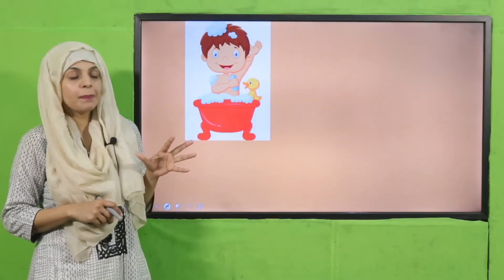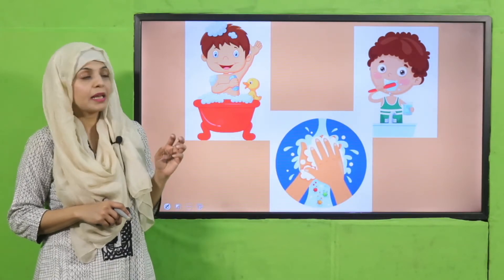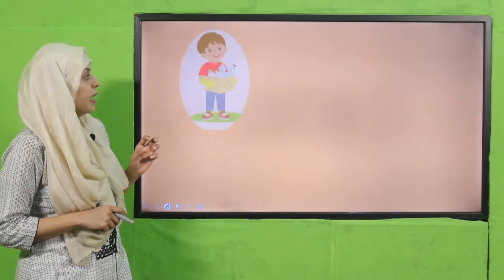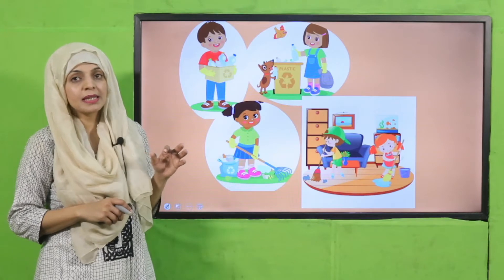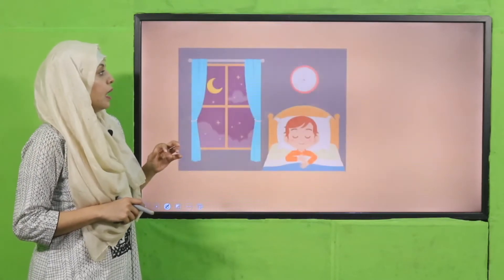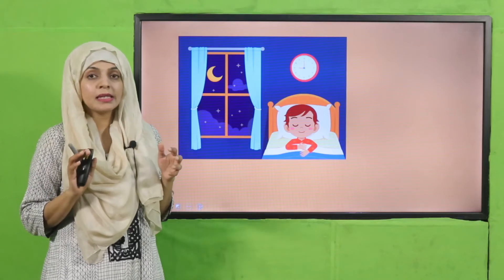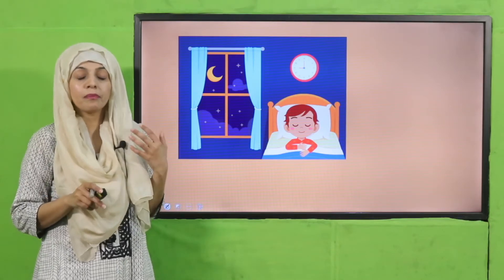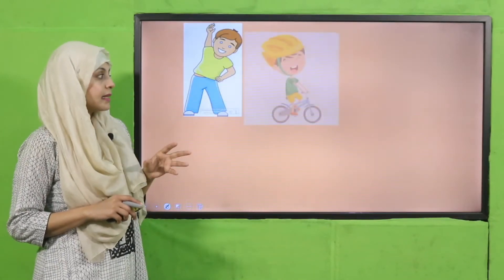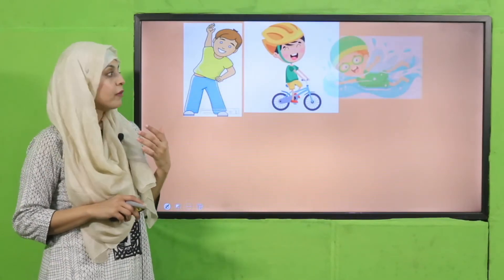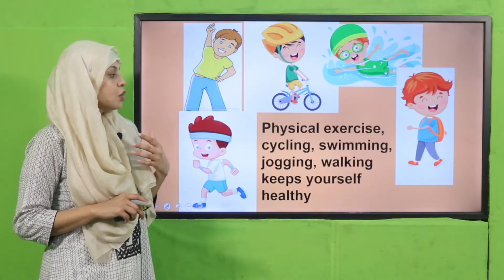To summarize: keep yourself clean - bath, brush, and hand wash - to keep yourself clean and healthy, and stay away from diseases. Keep your environment clean to stay away from diseases and germs. You must take 6 to 8 hours of deep sleep to work more effectively and efficiently. Take exercise - cycling, jogging, walking, swimming, running, stretching - to keep yourself healthy and active.